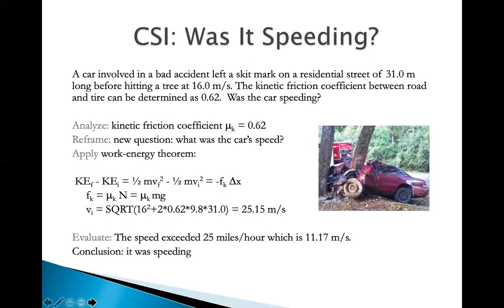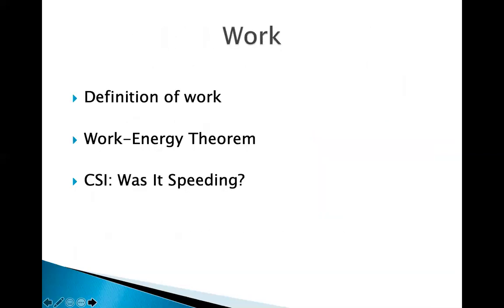So in summary, we can see that in police investigation, they can use physics to actually calculate the car's initial speed. This is a way for them to figure out what caused or who is responsible for some of the bad accidents. In summary, we learn about the definition of work, the work energy theorem, and we look at examples how physics can be used in police investigation.